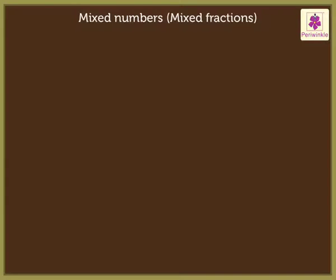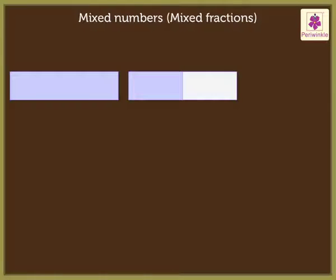Look, Annie has two grids. She has colored the first grid completely and half of the second grid. When added together, we get one and half. This one and half represents a mixed number.